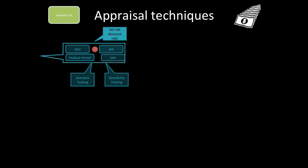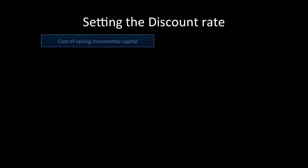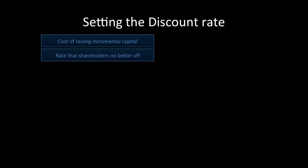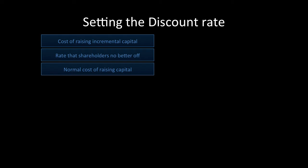Setting the risk discount rate. There's a lot to be talked about on this, but I find that the best way to go through this is 16 steps. First step: what is the cost of raising incremental capital? What is the rate that shareholders are no better off? What's the normal cost of raising capital?